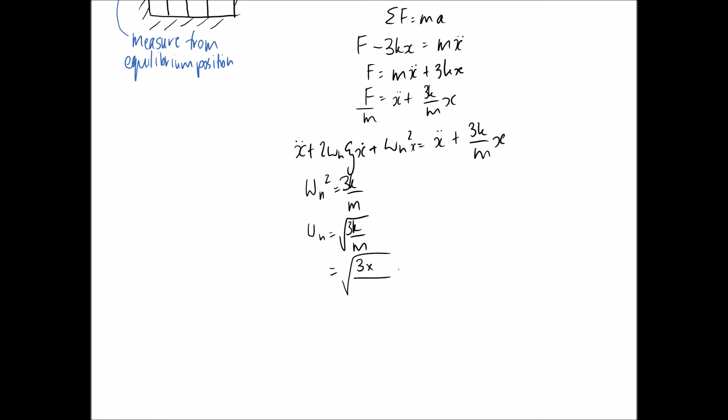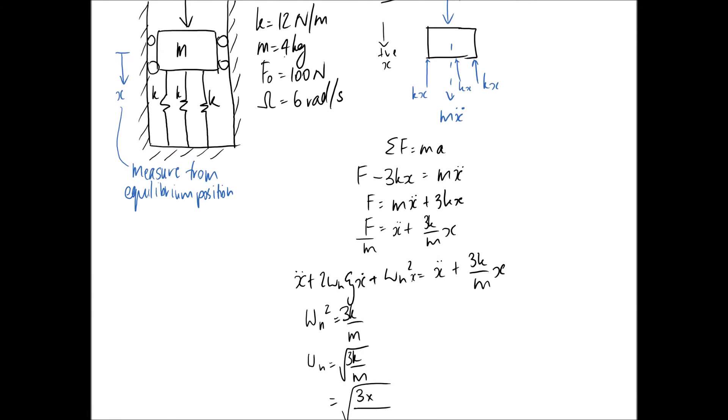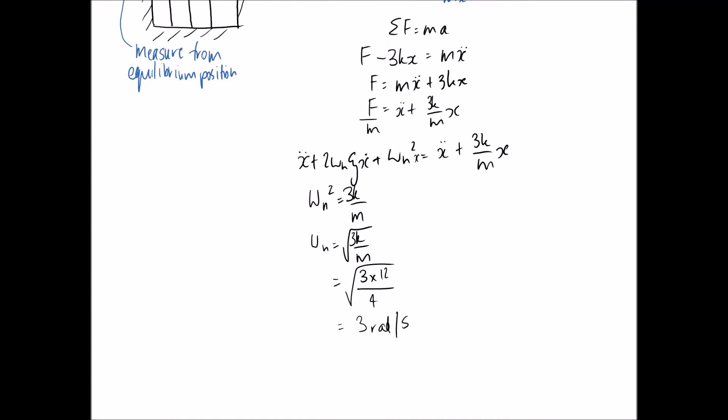Let's start with the omega n squared. It needs to be 3k on m. So 3 times k divided by m, and we're given k is 12, m is 4. So the natural frequency of this system is 3 radians per second. And the other thing we need is our damping ratio. For that we know that 2 omega n zeta has to be equal to 0 since there's no x dot part on this side. So that means that the damping ratio is equal to 0. You could get that just by looking at your system. You have no damper, so it's going to be an undamped system.